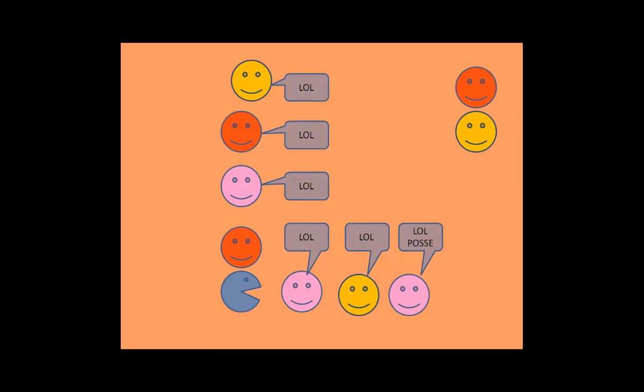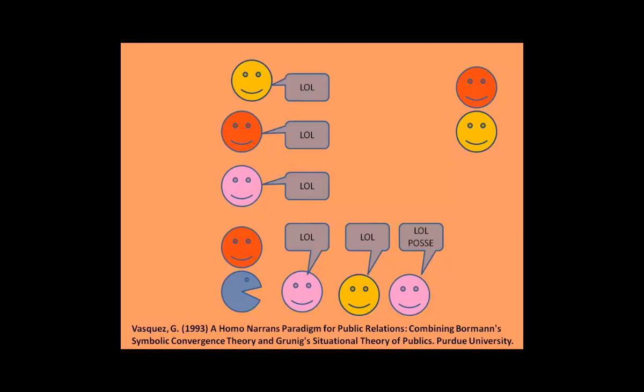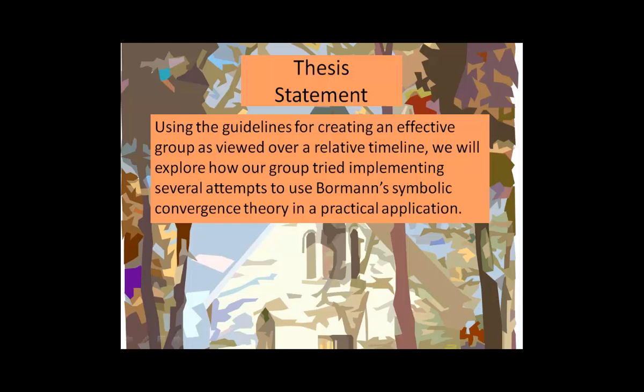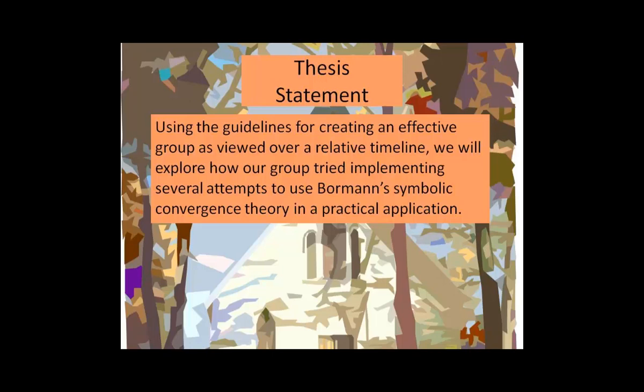The fantasy becomes a theme for the group, which the group expresses through written conversation or other media. The group then uses the theme to accomplish a goal or apply it to the greater good. Using the guidelines for creating an effective group, as viewed over a relative timeline, we will explore how our group tried implementing several attempts to use Bormann's symbolic convergence theory in a practical application. Ironically, the application is to research and deliver a presentation as a group on the subject of symbolic convergence theory.